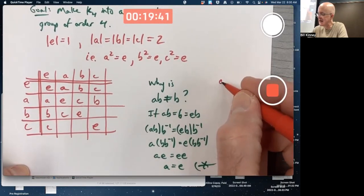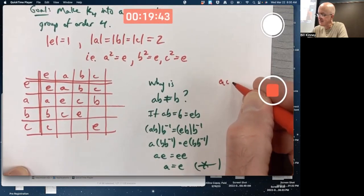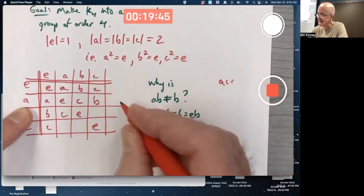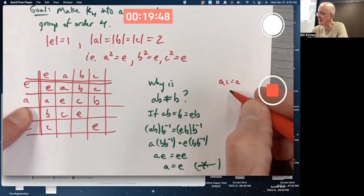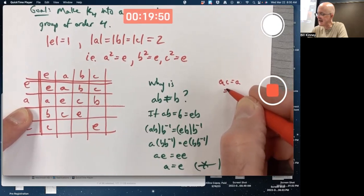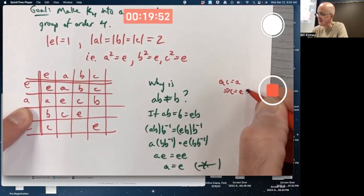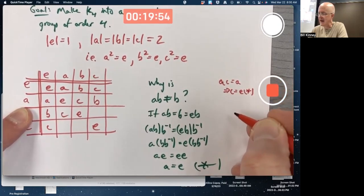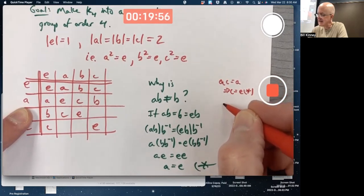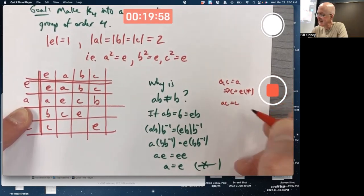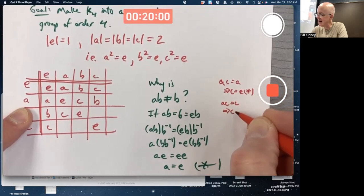If A times C equaled A, that would imply C equals E, and that would be a contradiction. If A times C equals C, that would imply A is the identity, and that would be a contradiction.